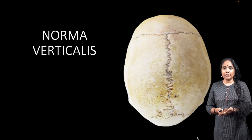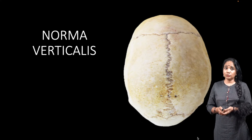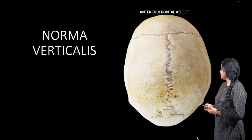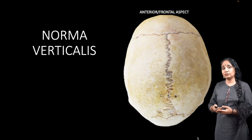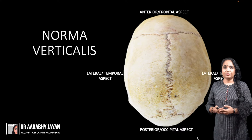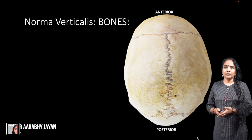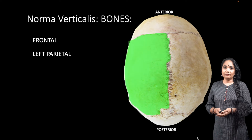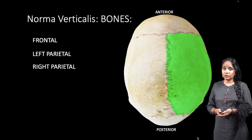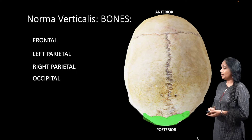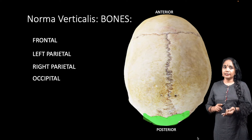We'll study the norma verticalis under three headings: the bones forming it, the sutures, and the other features. First, let's orient ourselves — the anterior frontal aspect is at the top, the posterior occipital aspect is below, and we have two lateral aspects. The bones forming the norma verticalis are the frontal bone, the right and left parietal bones, and the occipital bone — four bones in total.